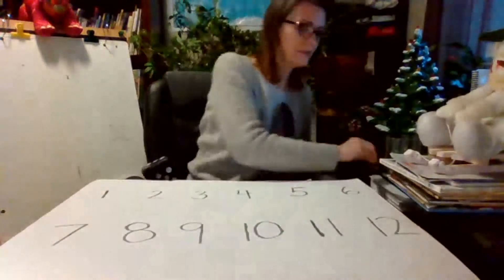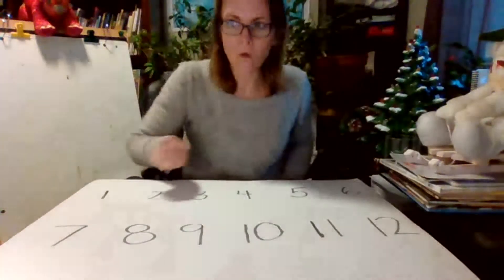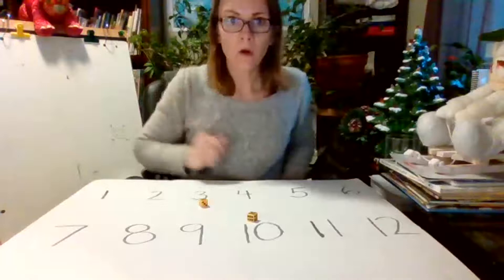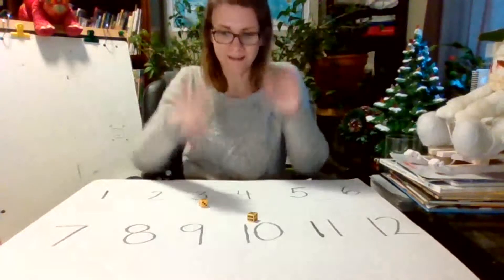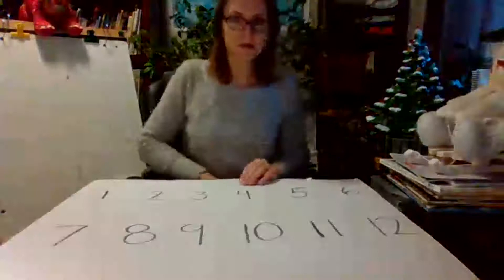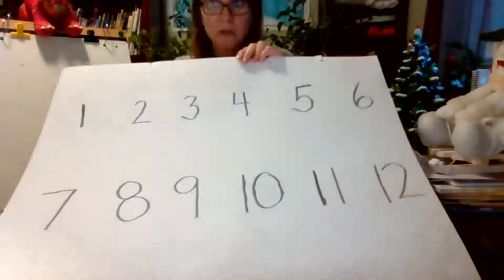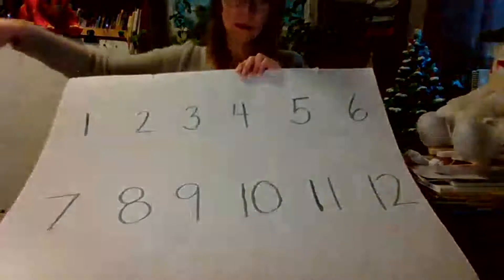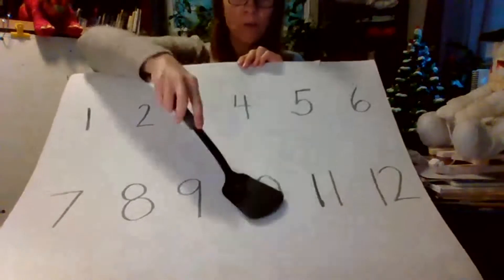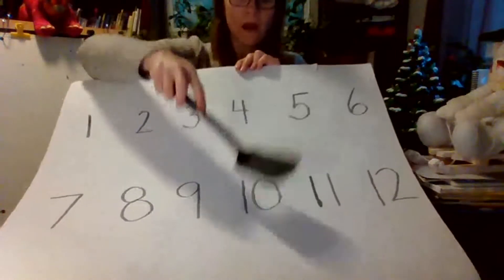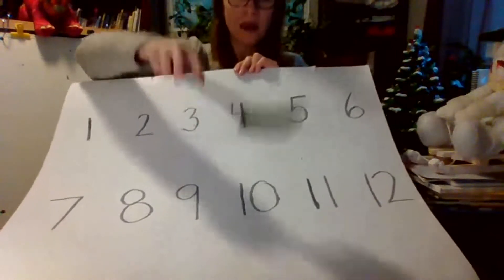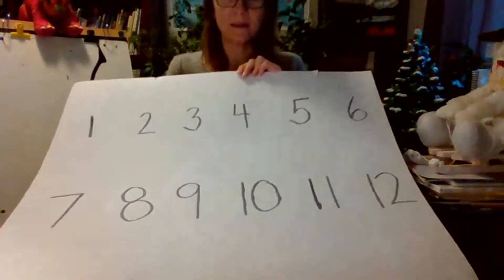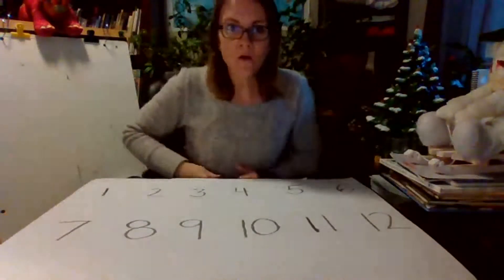All right, now I'm going to roll. Five, five—five and five, ten. Where's the ten? Where's the ten? Can you find it before I do? And there it is: one, two, three, four, five, six, seven, eight, nine, ten.